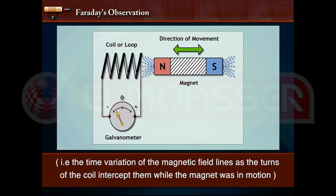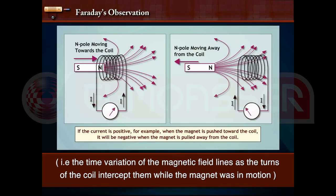That is, the time variation of the magnetic field lines as the turns of the coil intercept them while the magnet is in motion.